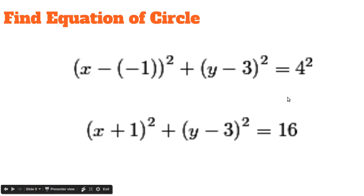Then we just substitute back in. So x minus negative 1 whole squared plus y minus 3 whole squared equals 4 squared. The double negatives become a positive and 4 squared is 16. So it's x plus 1 whole squared plus y minus 3 whole squared equals 16. And we're done. That's the answer right there.